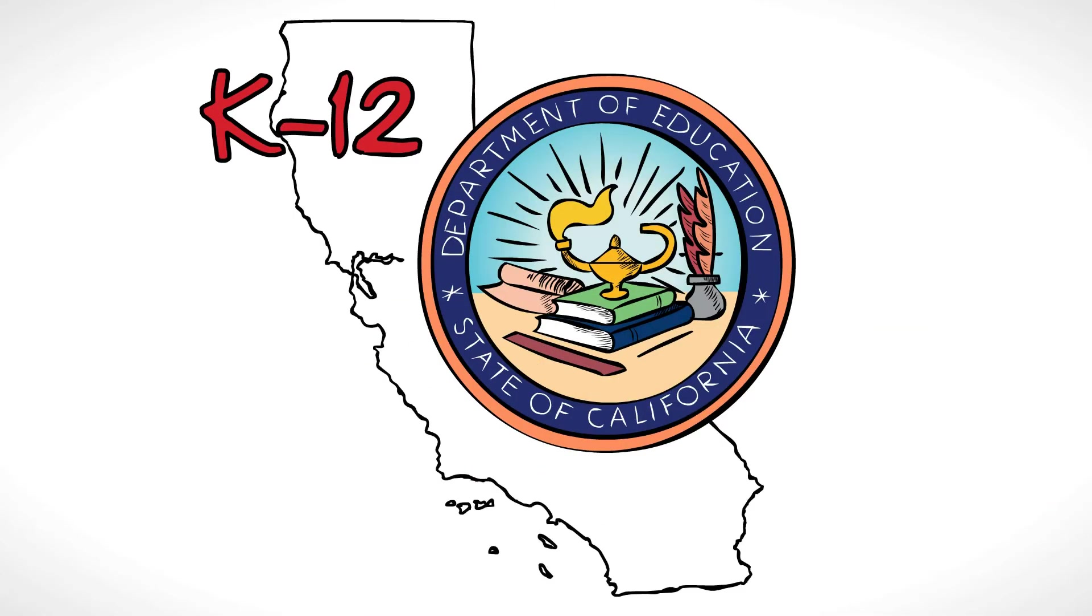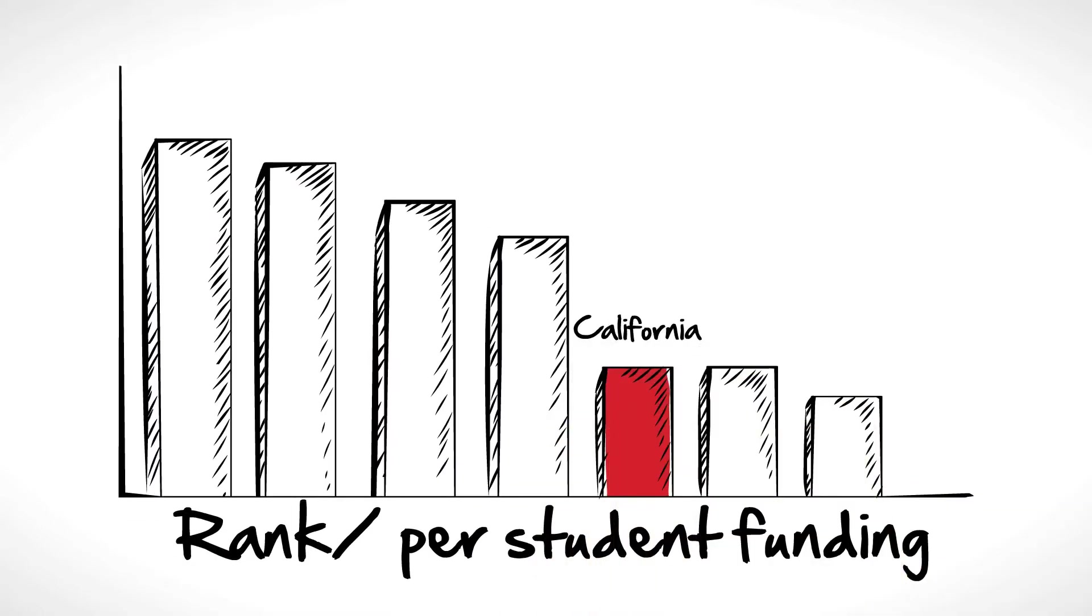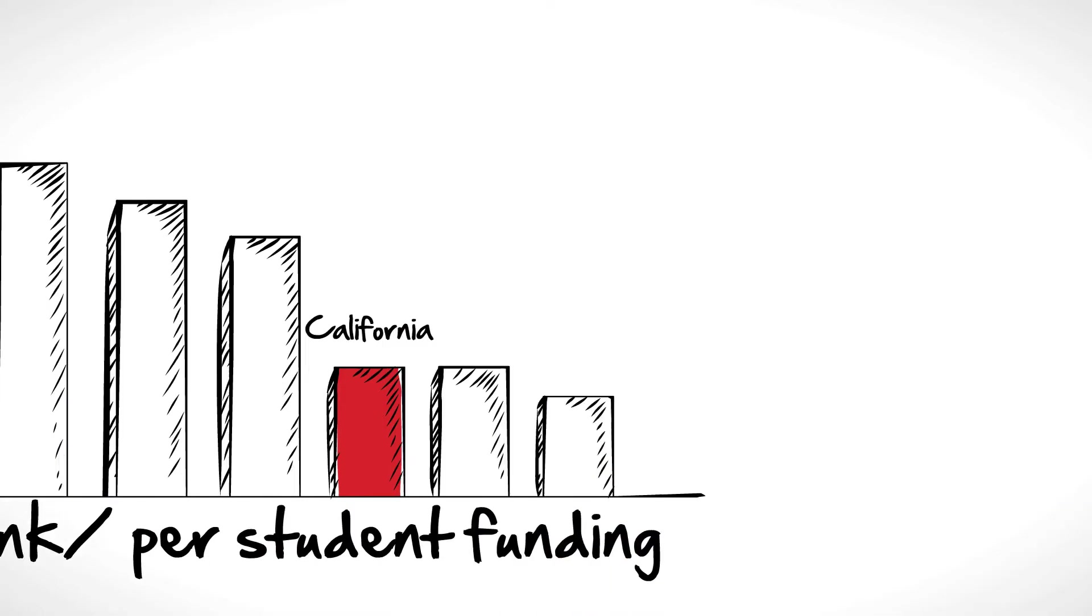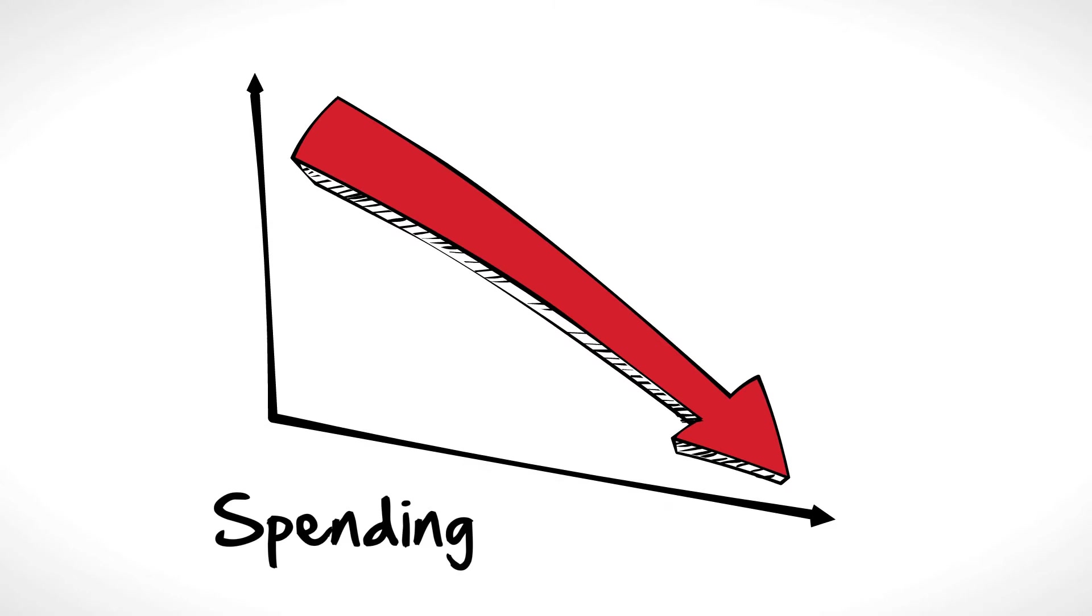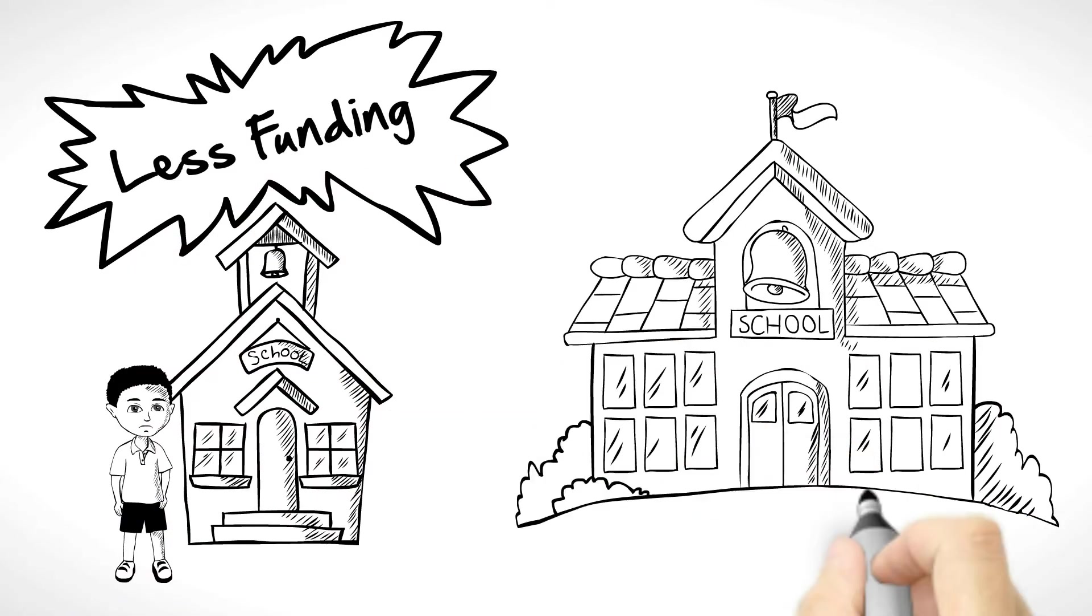K-12 education in California is in crisis. Not only does California rank near the bottom in per-student funding, and spending has been drastically cut, but students in low-income schools receive less funding than kids in well-to-do neighborhoods.